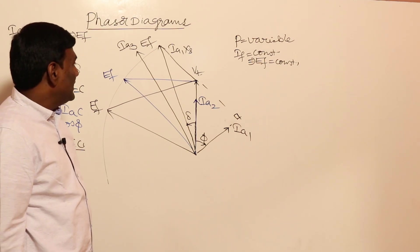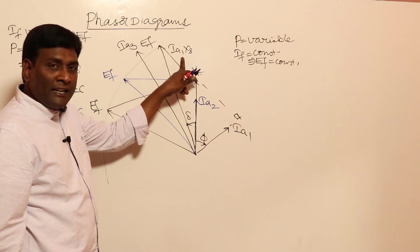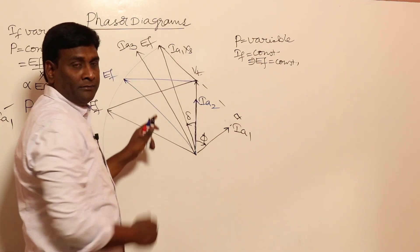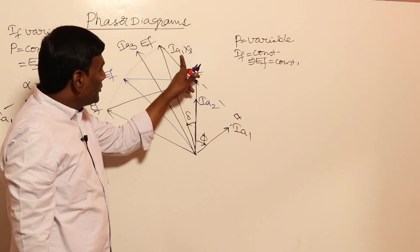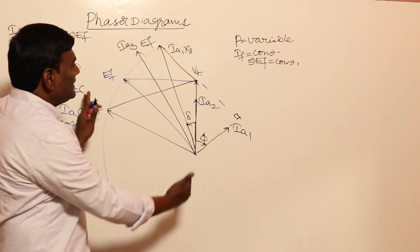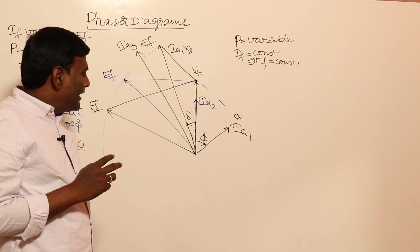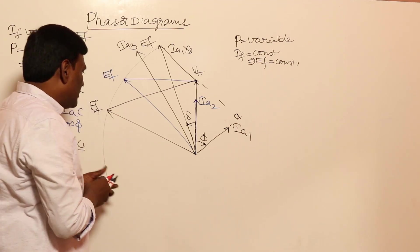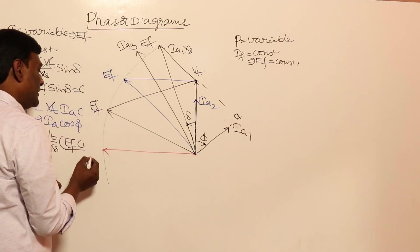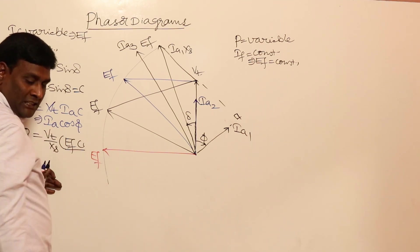As delta increases, EF sin delta increases and active power increases. Maximum power is obtained when delta = 90 degrees, at which point EF sin delta is at its maximum. This is the maximum output power condition for the synchronous generator.